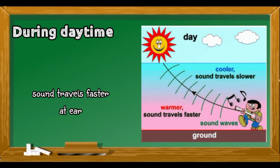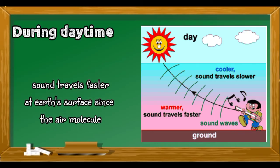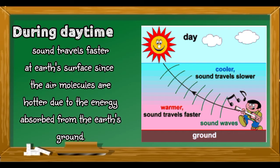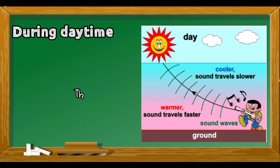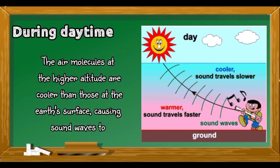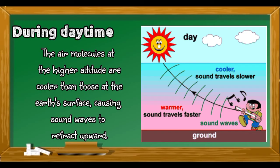Refraction explains how sound travels during daytime. Sound travels faster at Earth's surface since the air molecules are hotter due to energy absorbed from the ground. The air molecules at higher altitude are cooler than those at Earth's surface, causing sound waves to refract upward.